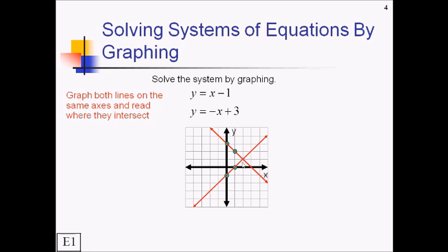So they cross over here. Hopefully it's on grid lines that we can easily read. So this will be the point 2, comma 1. And that is our solution to this system of equations.